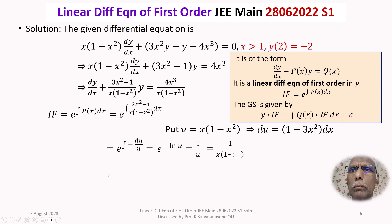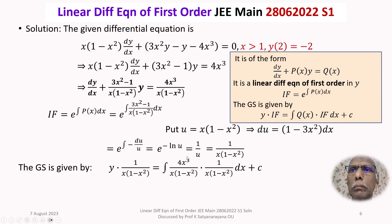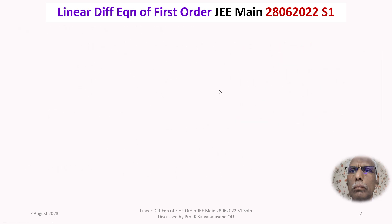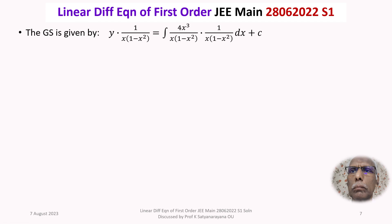We now write down the general solution: y · (1/(x(1 - x²))) = ∫[4x³ / (x(1 - x²))] · [1 / (x(1 - x²))] dx + C. Simplifying the integrand — x in the denominator cancels with x from x³ leaving x², and x² cancels one factor — it reduces to ∫4x / (1 - x²)² dx + C.